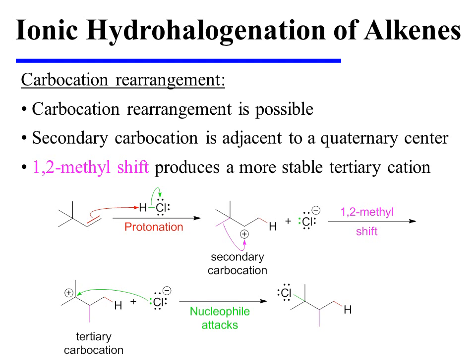Since the hydrohalogenation of alkenes involves a carbocation intermediate, carbocation rearrangement is a possibility. In this specific example, the alkene is first protonated so as to generate the more stable secondary carbocation. However, that secondary carbocation resides next to a quaternary carbon. This carbon is more highly substituted, and therefore a carbocation at that location would likely be more stable. A 1,2-methyl shift causes one methyl group to migrate to where the carbocation used to be, and therefore the carbocation migrates to this new center, which is tertiary. A more stable carbocation is formed. Chloride then attacks the carbocation, yielding the final alkyl chloride reaction product.